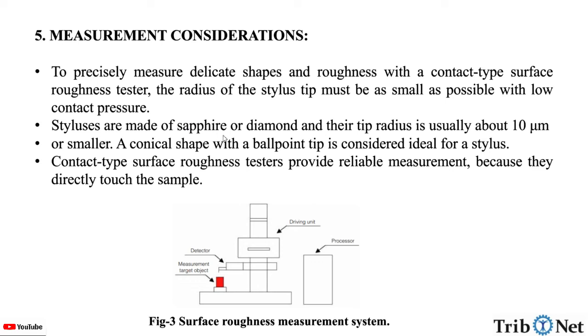Styluses are made of sapphire or diamond, and their tip radius is usually about 10 micrometers or smaller. A conical shape with a ballpoint tip is considered ideal for a stylus.